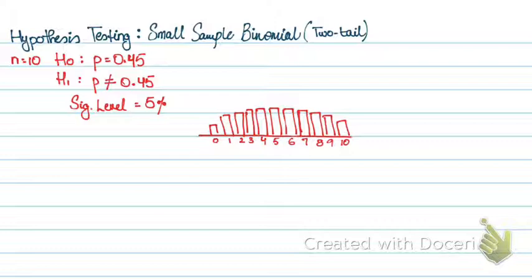First thing first, x follows a binomial. In this case, I have taken n as 10 and my probability of success is 0.45. Now, my null hypothesis is p equals 0.45, my alternative hypothesis is p not equals 0.45, and my stated significance level is 5%.